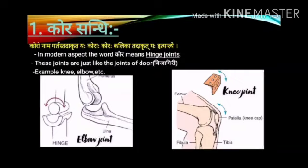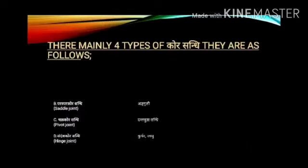Kora Sandhi: In the modern aspect, the word Kora means hinge joint. These joints are just like a door hinge, i.e. bijagiri joints. It is present in the knee and elbow.